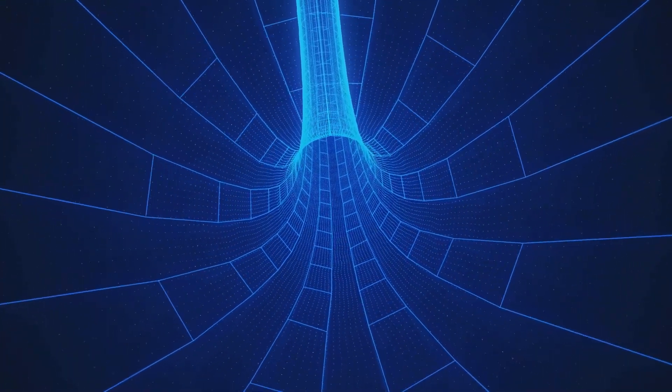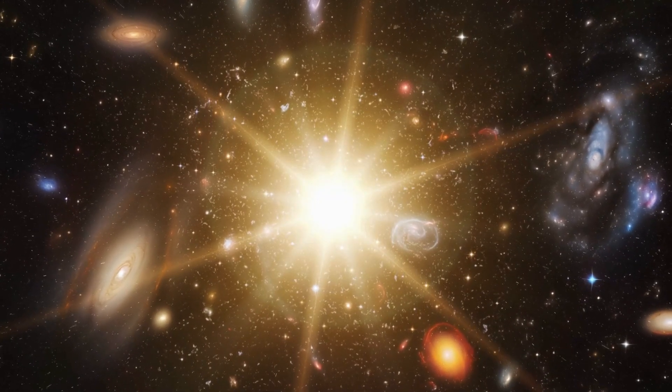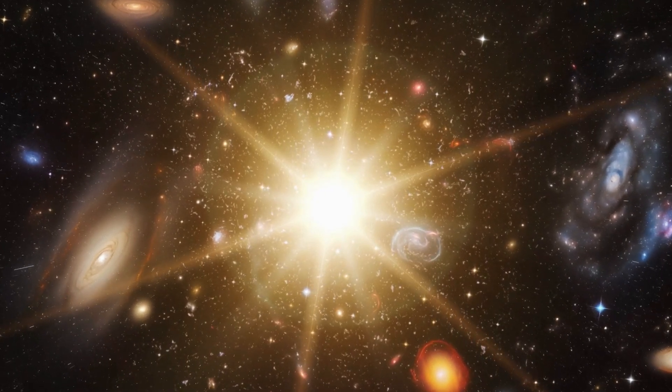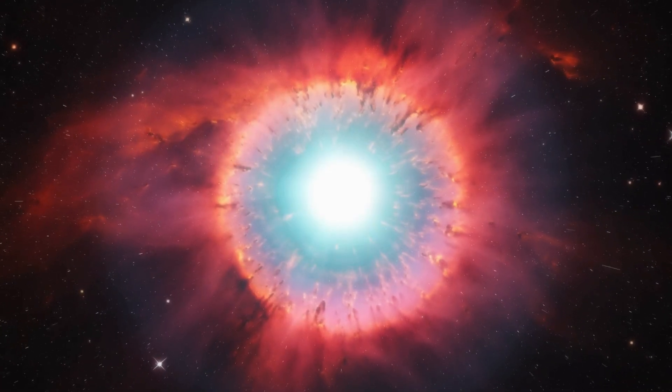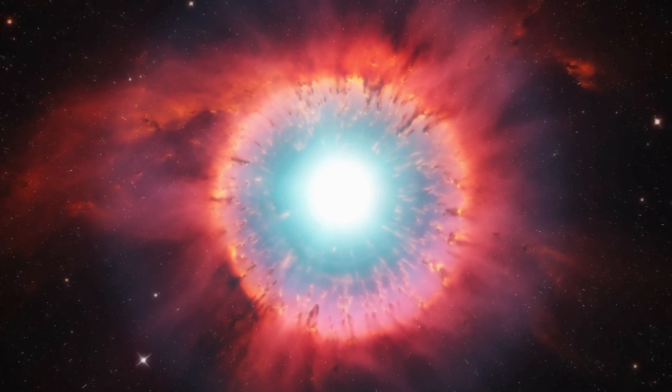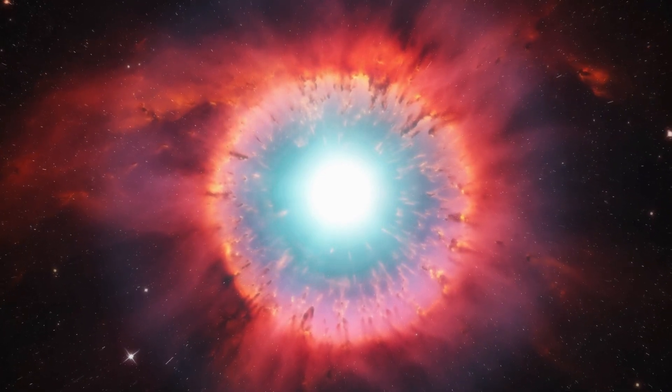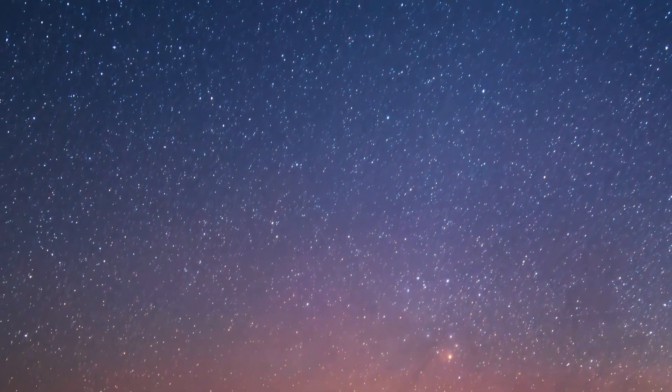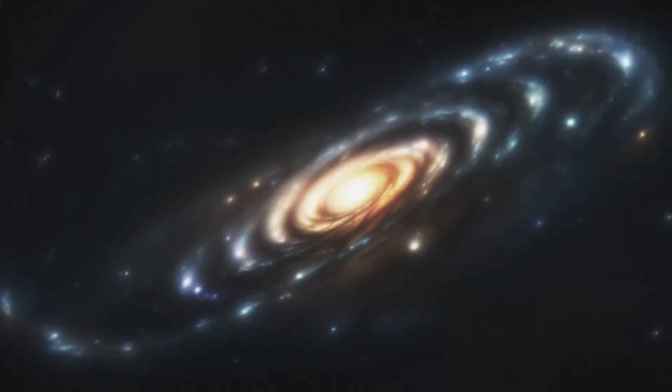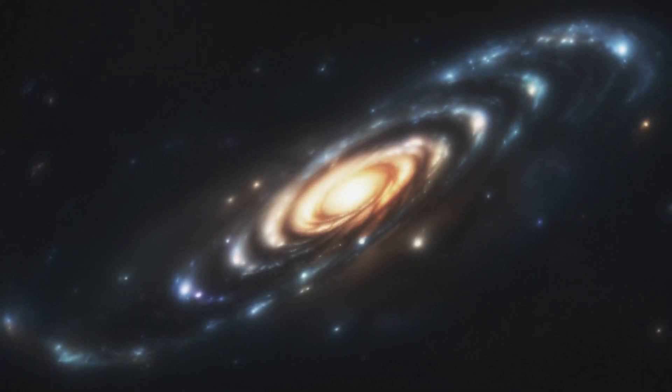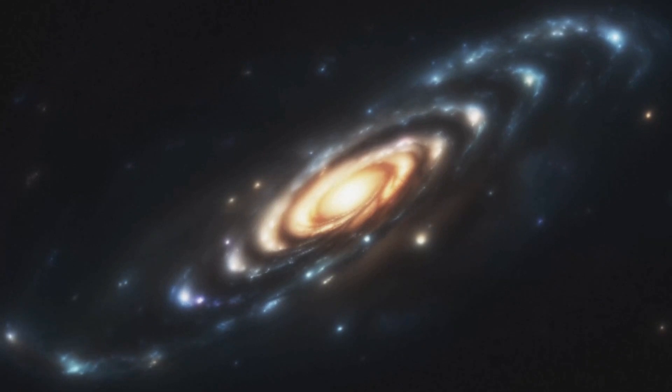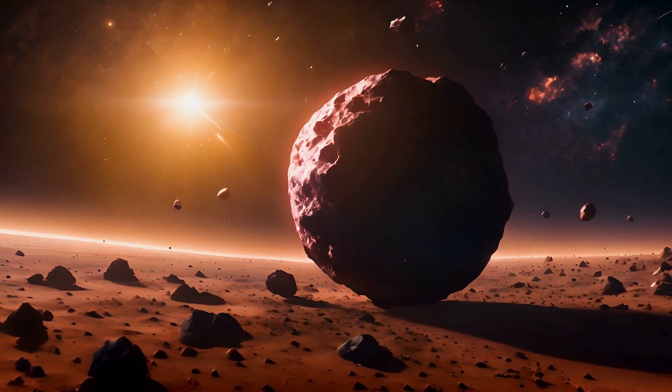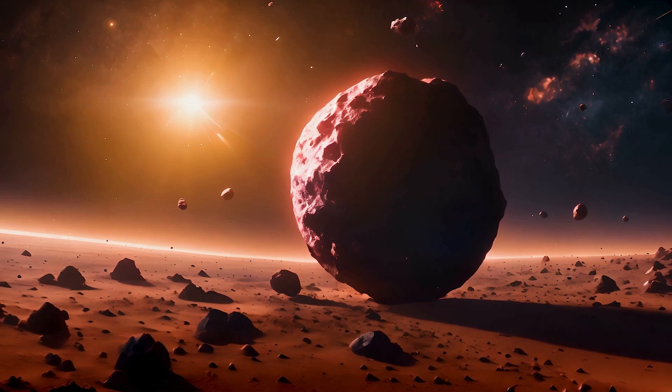James Webb's discoveries are not just challenging our understanding of dark energy and dark matter; they are reshaping our ideas about galaxy formation. By looking further back in time than ever before, the telescope has revealed galaxies that were much more massive and advanced than the standard model had predicted, forming just 300 million years after the Big Bang. Early galaxies, which should have been composed of young hot stars, were found to have heavy elements and even supermassive black holes at their cores, features that challenge the traditional model of galaxy evolution. These findings have intensified the debate within cosmology, suggesting that the processes governing galaxy formation may have been more rapid and efficient than previously thought.